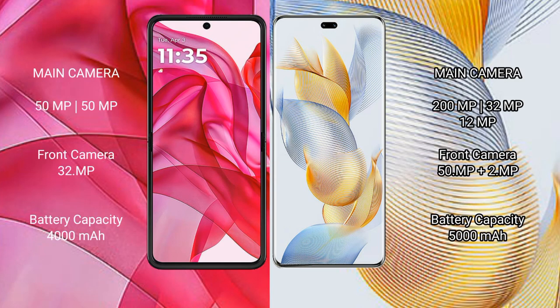Motorola Razr 50 Ultra has a rear dual-camera setup with a 50-megapixel and 51-megapixel configuration, and a 32-megapixel front camera. Honor 90 Pro has a rear triple-camera setup with 200-megapixel, 32-megapixel, and 12-megapixel sensors, and a dual front camera setup with 50-megapixel and 2-megapixel.